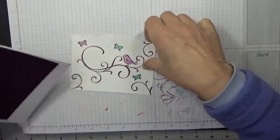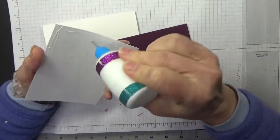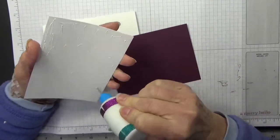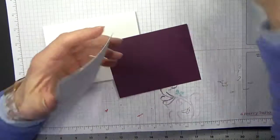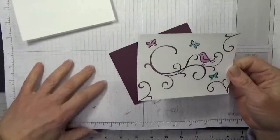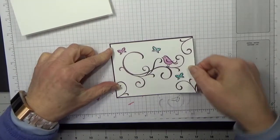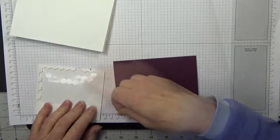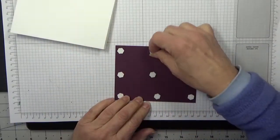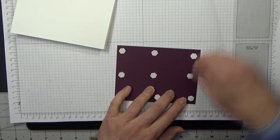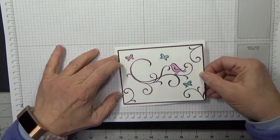Then I'm going to fill the other two in with Bermuda Bay. And that's pretty much our card front. So let's put everything together. I'm going to attach the front flat onto the Blackberry Bliss, and then we'll pop the Blackberry Bliss onto the card base using dimensionals.